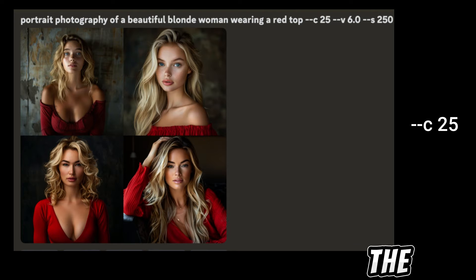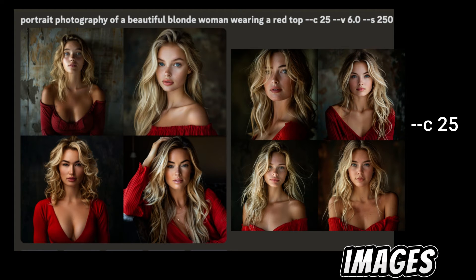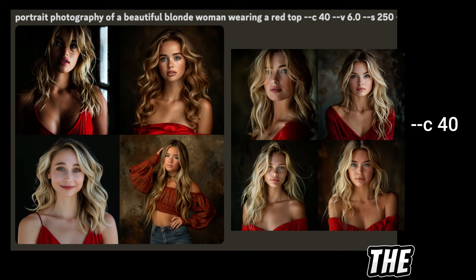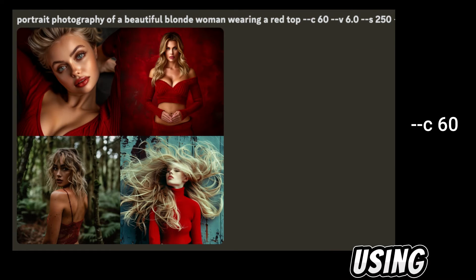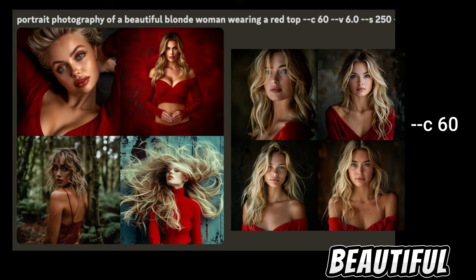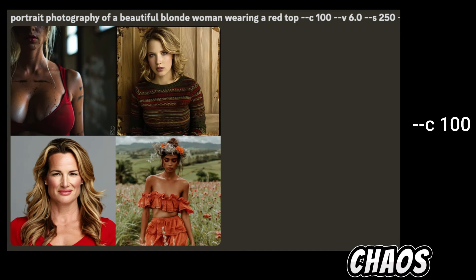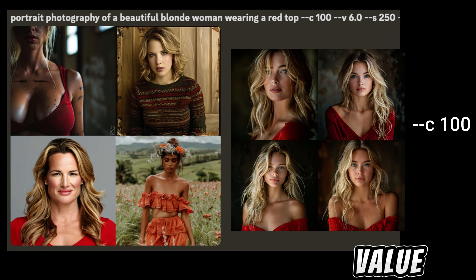With chaos 0, all images on the grid look very similar. At a chaos value of 25, you begin to see just a slight difference. At 40, the images start looking even more different. At 60, the effects are clearly visible — all images are completely different from each other but still represent the blonde lady in a red top. At chaos 80 and 100, the images look nothing like each other and aren't quite what you'd expect from the prompt.